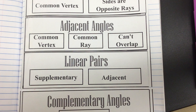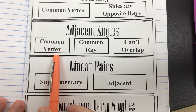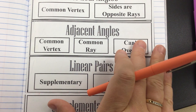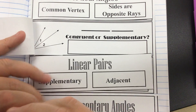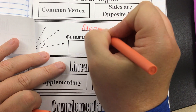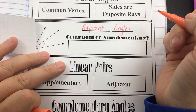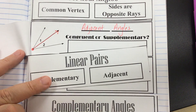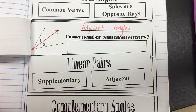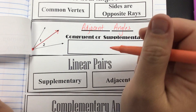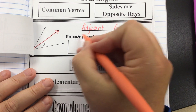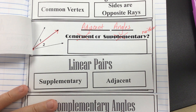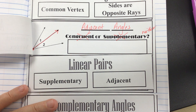Next is adjacent angles. Adjacent angles have a common vertex, a common ray (like a common side), and they can't overlap — they're touching, right next to each other. Opening the tab: they're adjacent because they have a common vertex and a common side in the middle. They could be congruent and they could be supplementary, but they don't have to be, so we put an X through both. There's nothing special about them besides being adjacent — we don't know they're congruent, supplementary, or complementary. The only thing we can say is that angle one and angle two are adjacent angles, abbreviated ADJ.